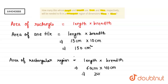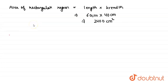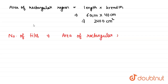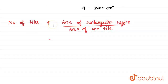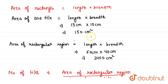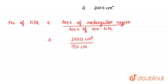The number of tiles will be equal to the area of the rectangular region divided by the area of one tile. We find out above that the area of the rectangular region is 2400 centimeter square and the area of one tile is 150 centimeter square. So dividing 2400 by 150, we will have 16 tiles. Our answer is: number of tiles equals 16.